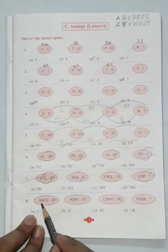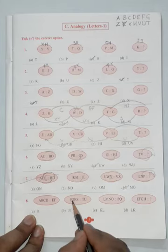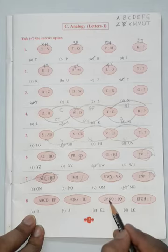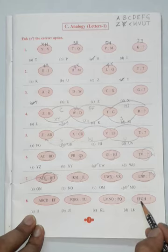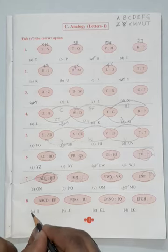Now the last one. A B C D E F, that means they are directly following a sequence. P Q R S T U, L M N O P Q, E F G H. Automatically I and J will be D.